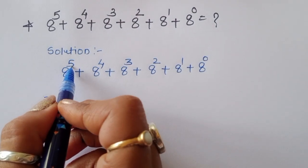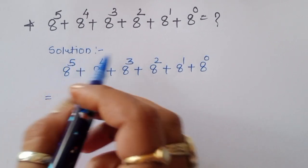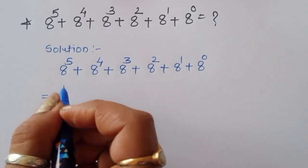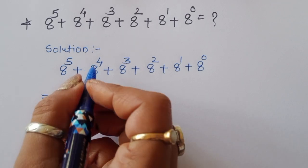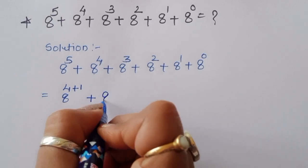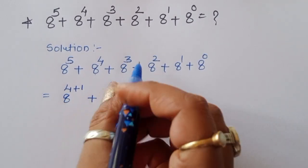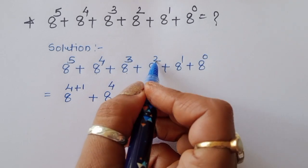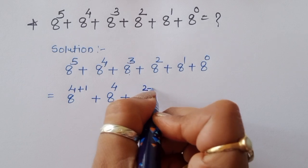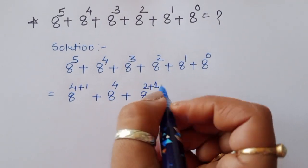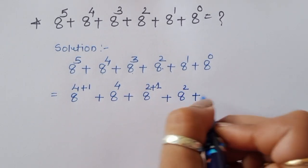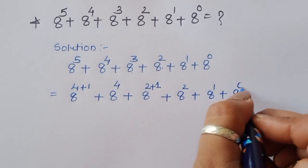Now we can rewrite these terms. You can see this is 5 and this is 4, so 4 plus 1 is 5. We can write 8 power (4 plus 1). And 2 plus 1 is 3, so we change 8 power 3 to 8 power (2 plus 1). So: 8 power (4+1) plus 8 power 4 plus 8 power (2+1) plus 8 power 2 plus 8 power 1 plus 8 power 0.